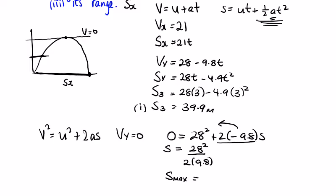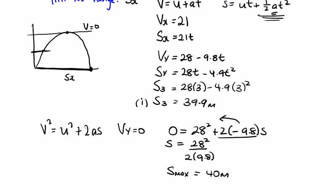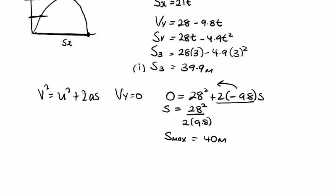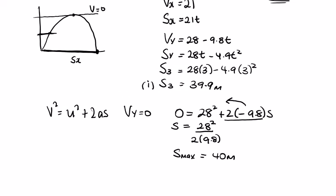So the maximum height s_max = 28² / (2 × 9.8) = 40 meters. Part 3 is the range. We know s_x = 21t, so we need to find t.